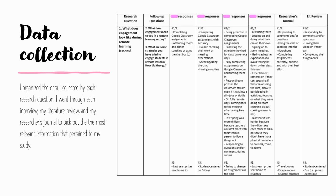This is an example of how my data collection process looks — it was many, many pages by the end, so I included just the first section. I made one column for each of the research questions with follow-up questions as asked in the interview, then compiled and summarized the big responses from each person. This let me line them up and compare what each teacher said alongside my researcher's journal and literature review, making it easy to organize all the information I was collecting.